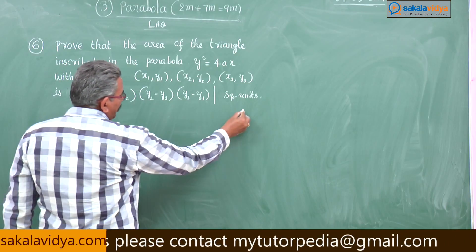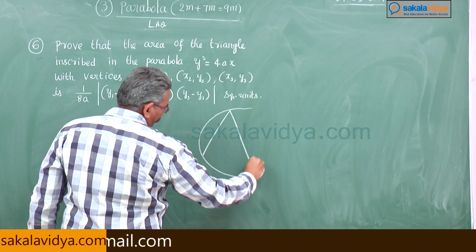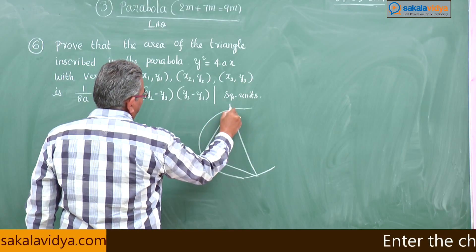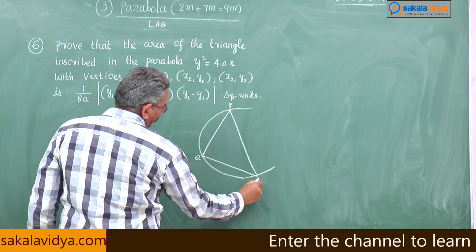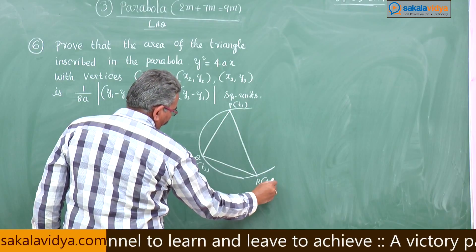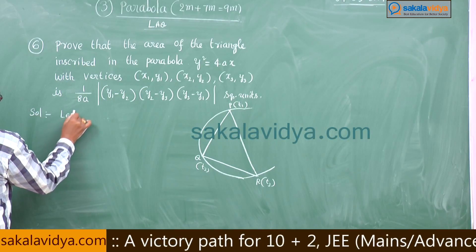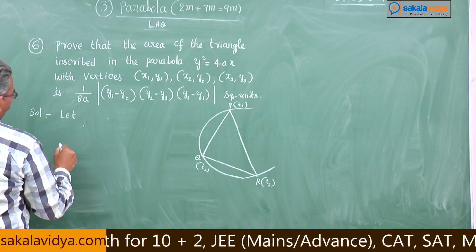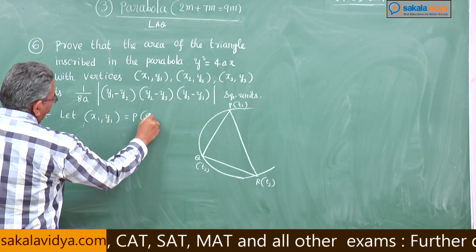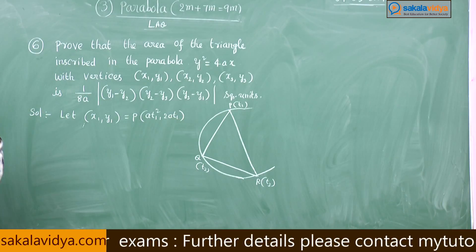Suppose this is the parabola. The triangle inscribed in it — say this is P, Q, R — better say P of t1, Q of t2, R of t3. Now, let us suppose x1, y1 is equal to P of (at1², 2at1), using the parametric form.